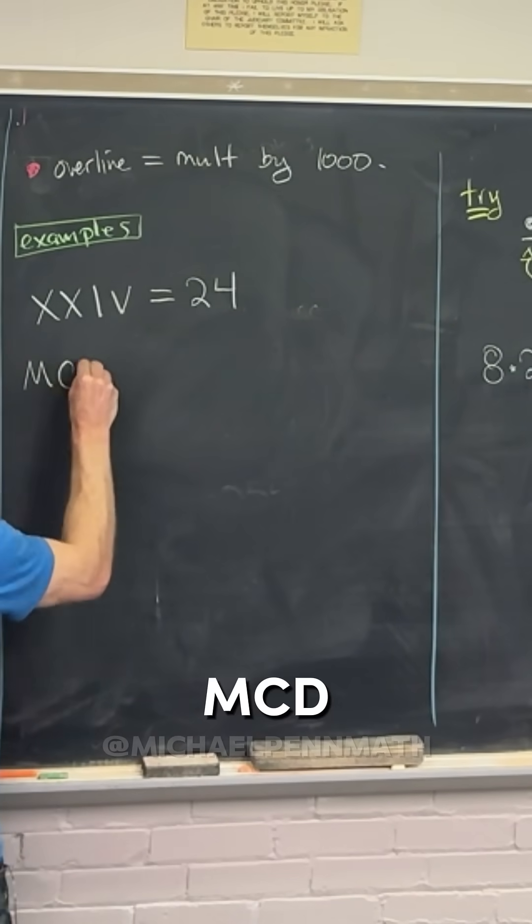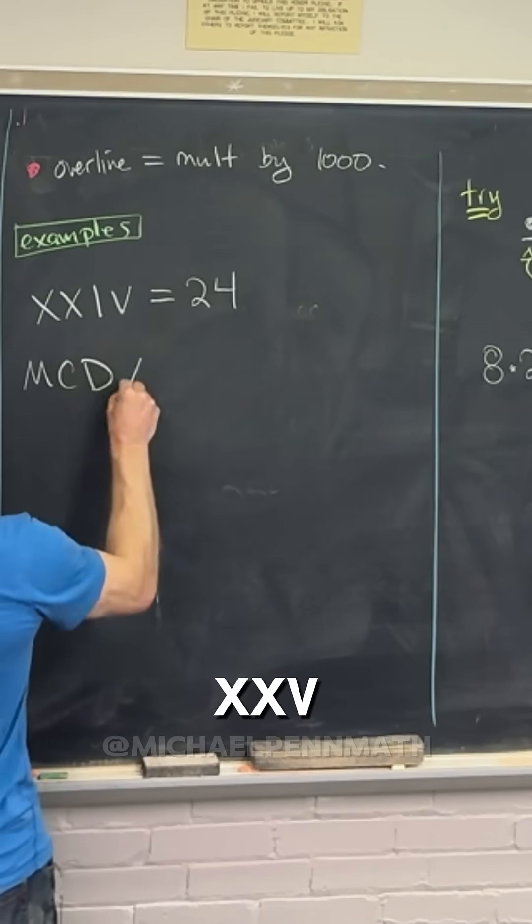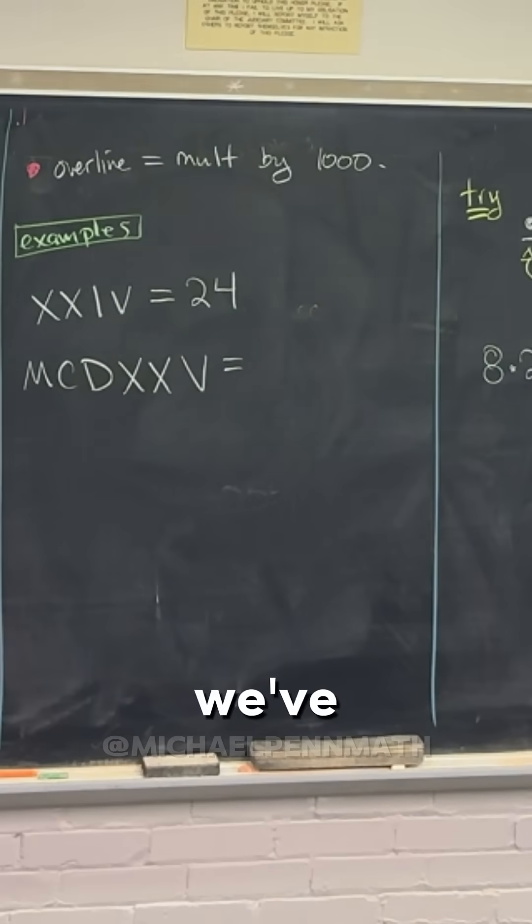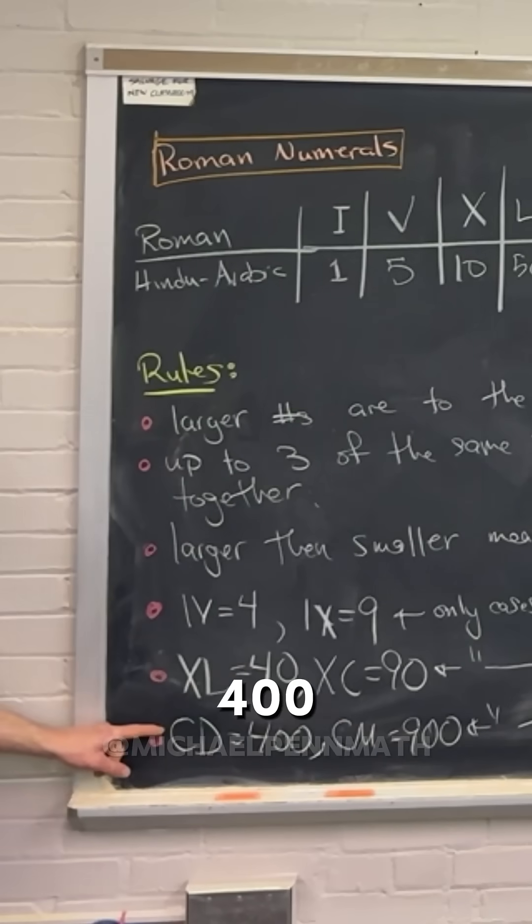Okay, so 24. And then what about MCDXXV? So what is that? We've got a thousand, right, and then CD represents 400 because of this subtraction rule.